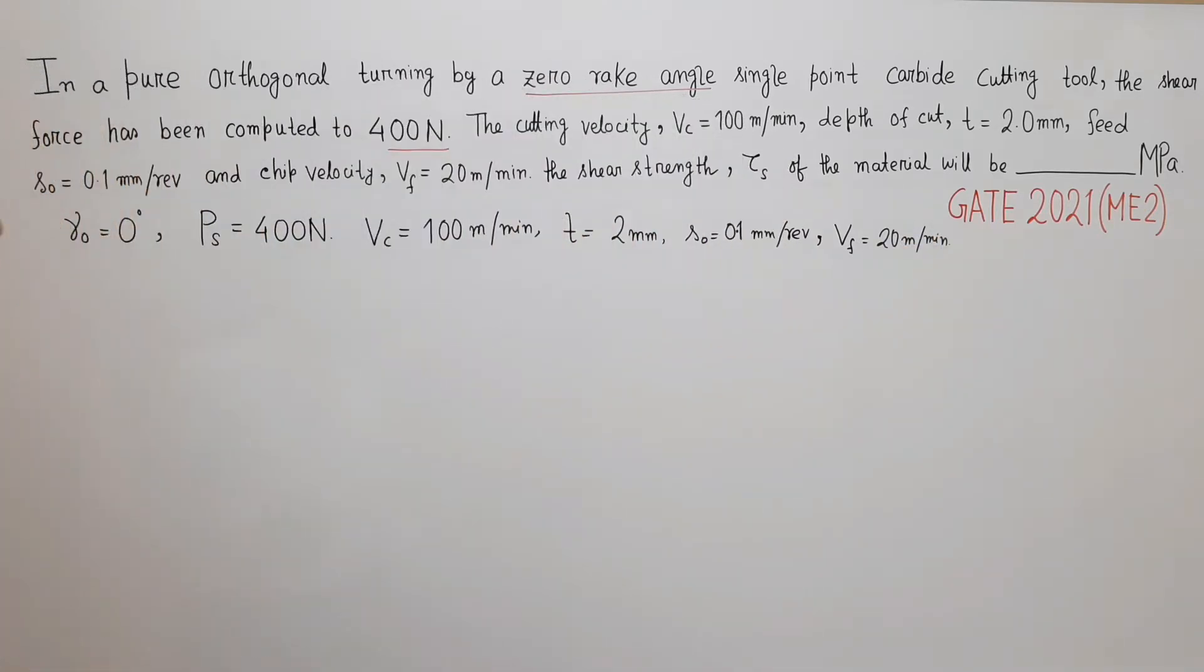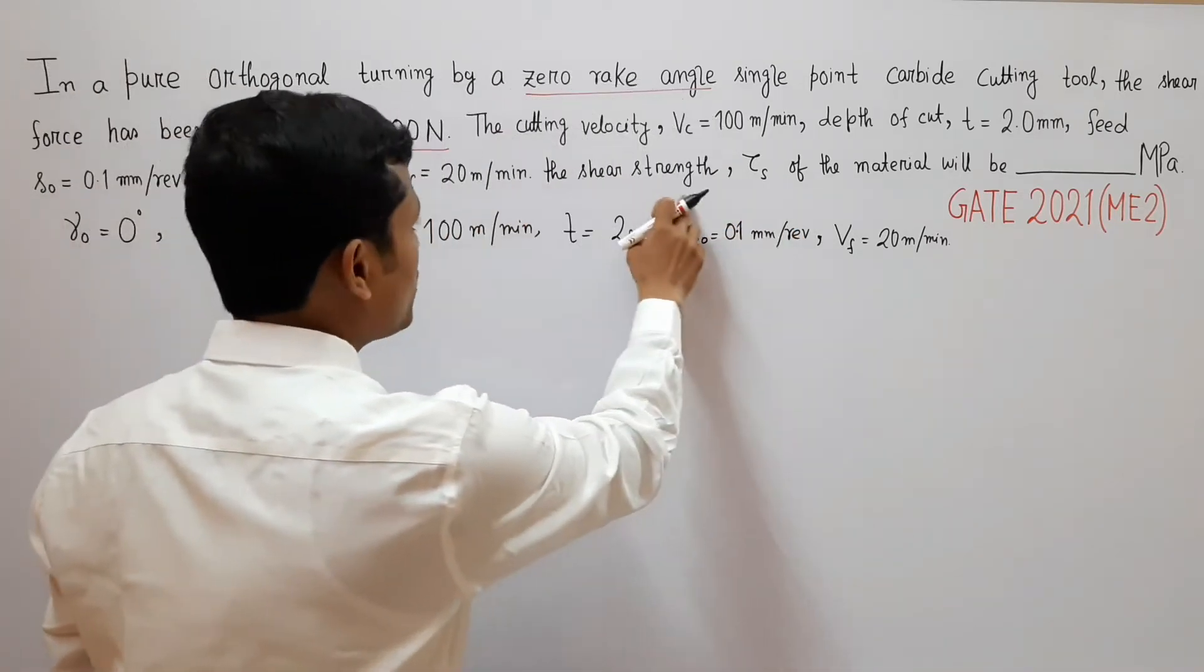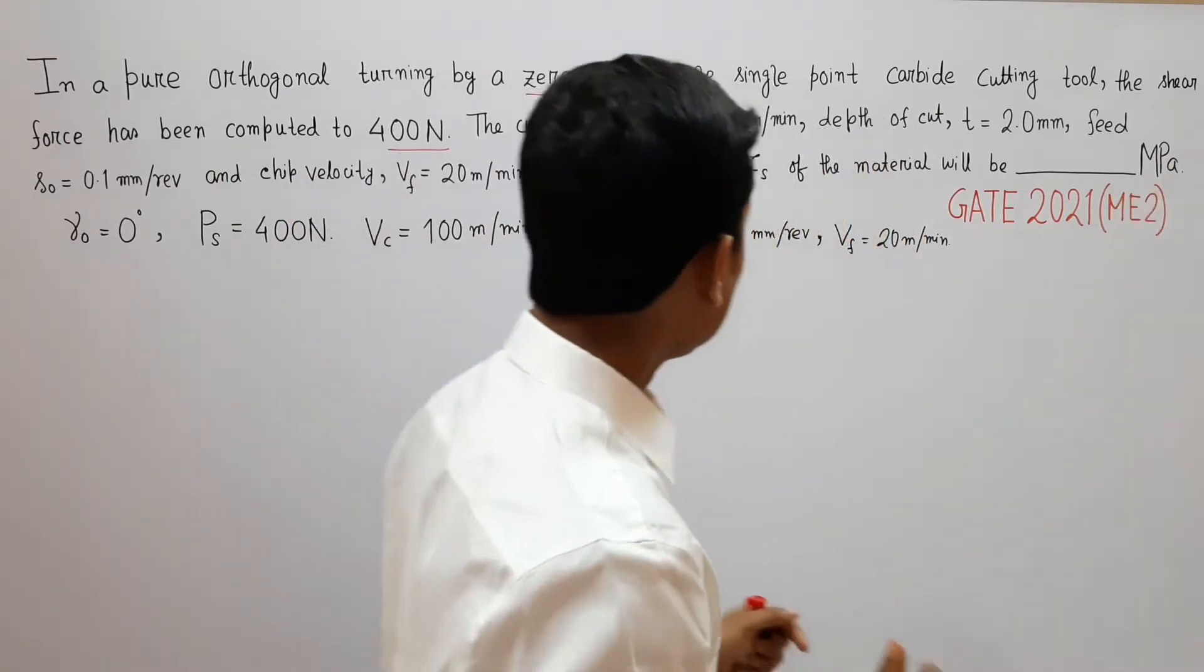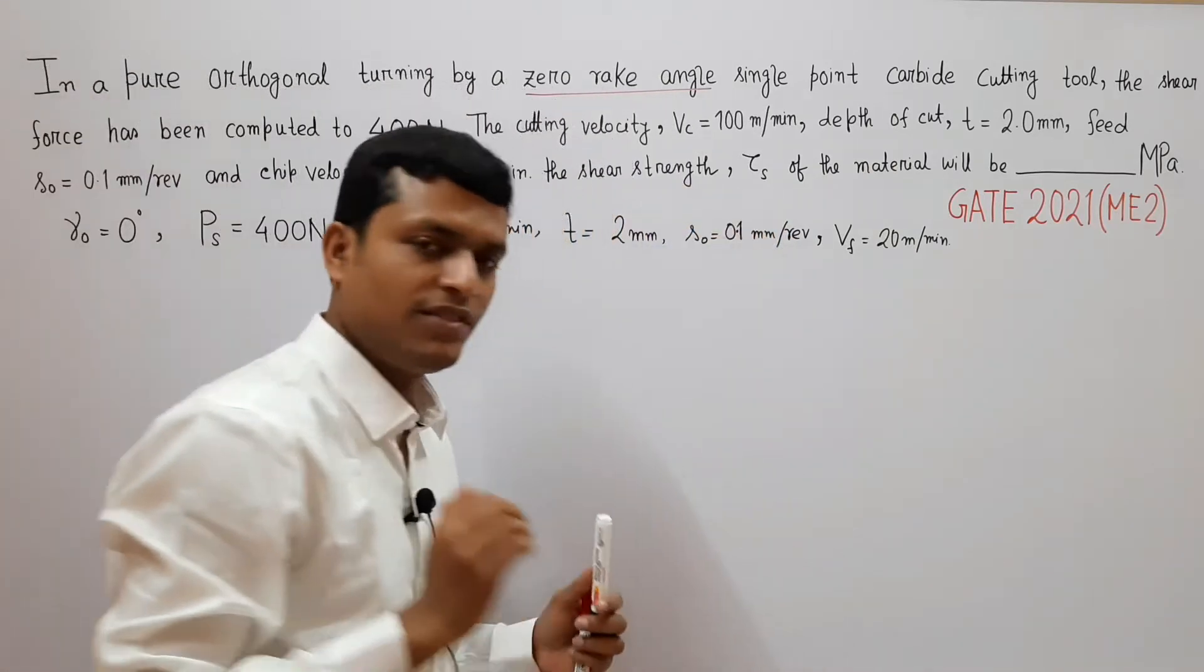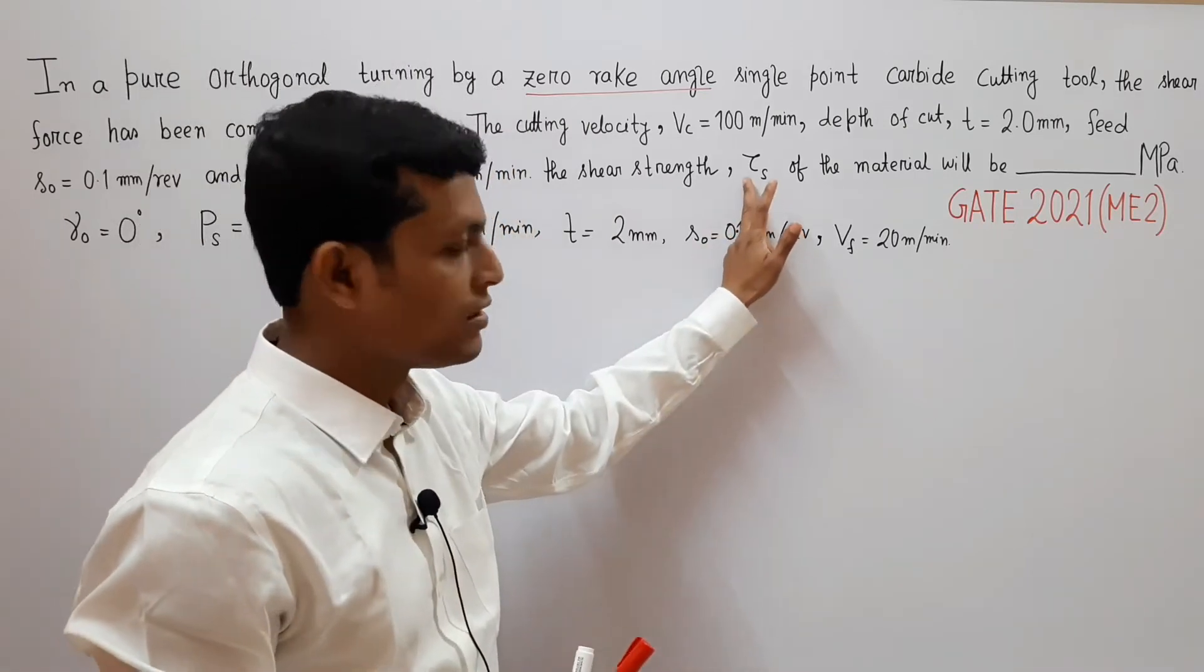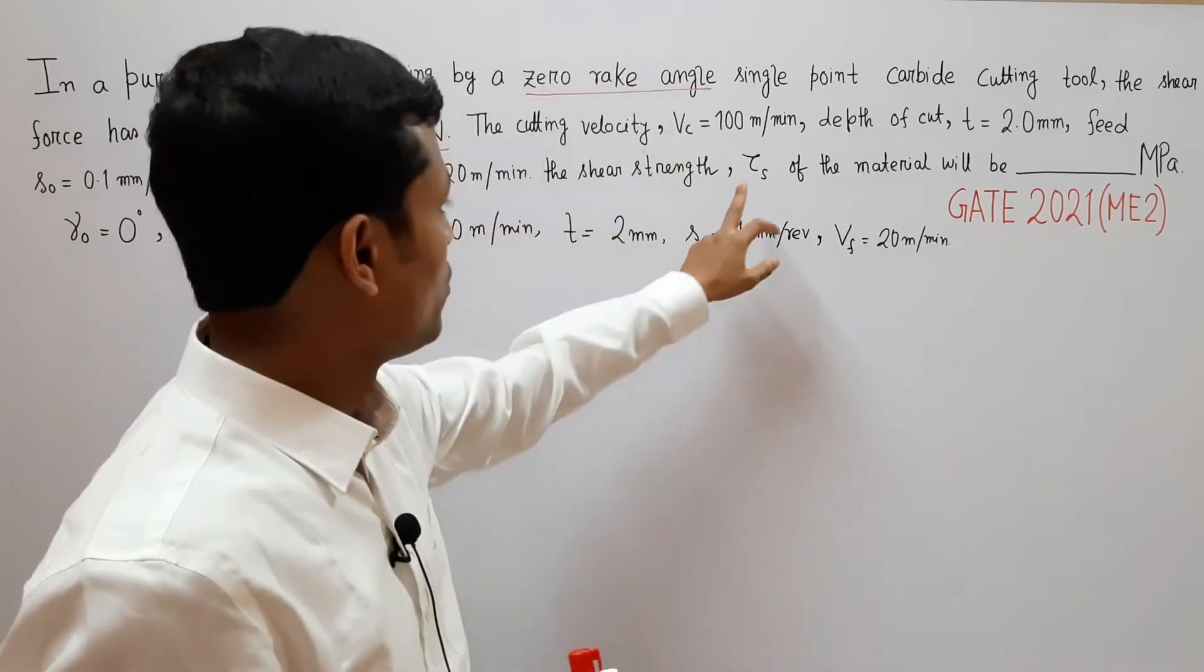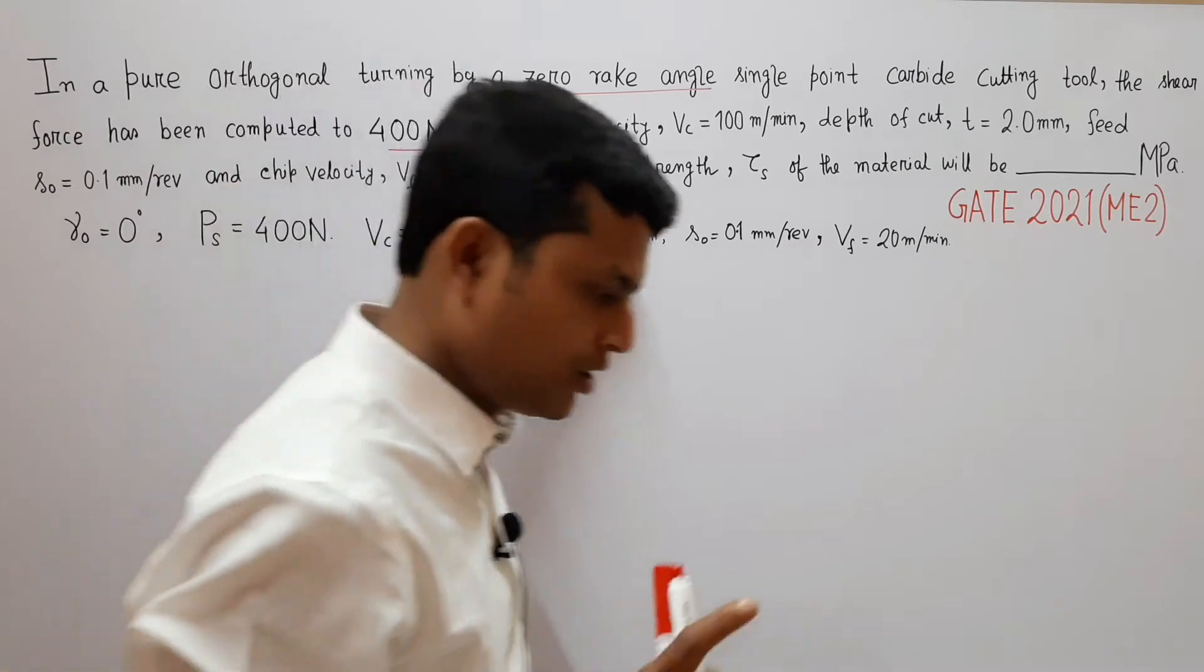These are the given data. Now the shear strength tau_s of the material has to be determined in terms of MPa. So tau_s is the shear strength of material or specifically dynamic yield shear strength of the material because tau_s changes with different parameters.